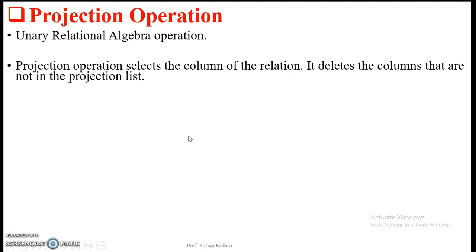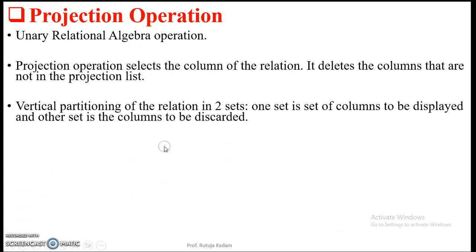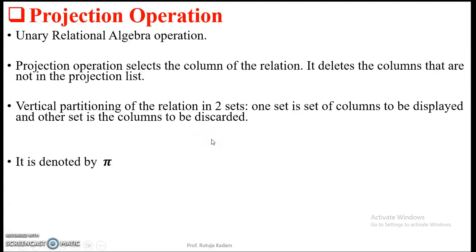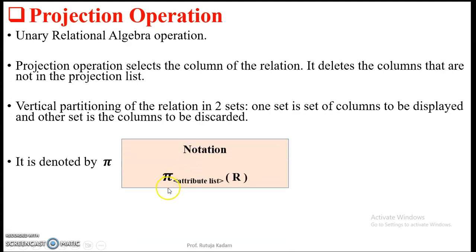Projection operation selects the columns of the relation. It deletes the columns that are not in the projection list. Basically, it does vertical partitioning of the relation into two sets: the first set is the columns to be displayed, and the second set is the columns to be discarded. It is denoted by the PI symbol.